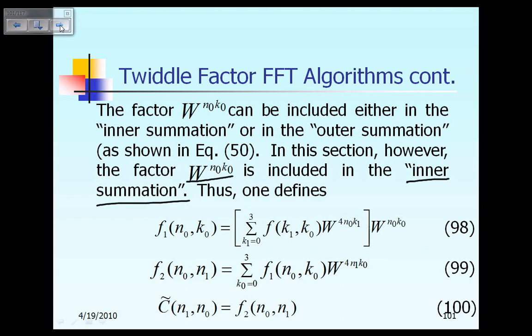So, here it is. As you can see, the computation of the first vector f1 is equal to this term that we said earlier. But now, we are also including the term w raised to the power n0 k0. And then, we say, after we compute the intermediate vector f1 in equation 98, we get that term right here. And then, we multiply it with w raised to the power 4n1 k0, which is this term right there in equation 98.